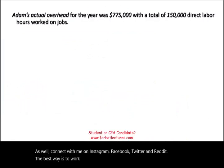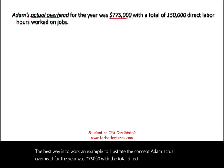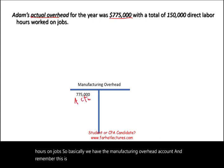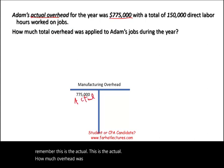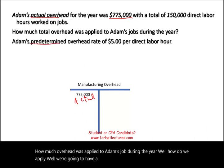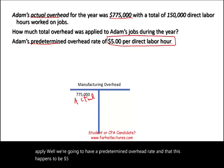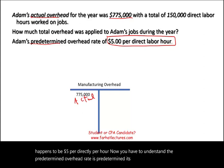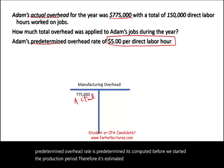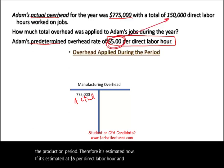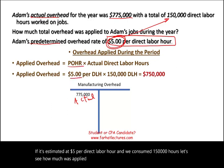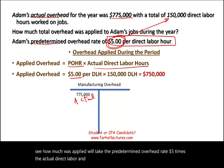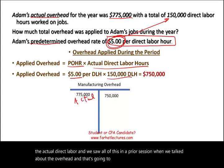Let's work an example. Adam's actual overhead for the year was $775,000 with a total of 150,000 direct labor hours worked on jobs. The predetermined overhead rate is $5 per direct labor hour. To find applied overhead, we multiply $5 by the 150,000 actual direct labor hours, which gives us applied overhead of $750,000.